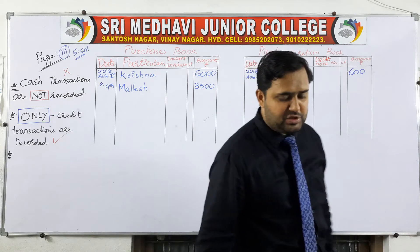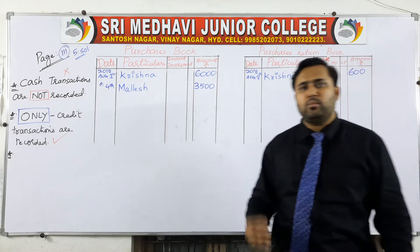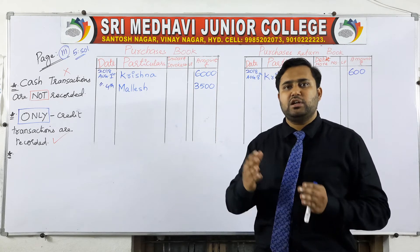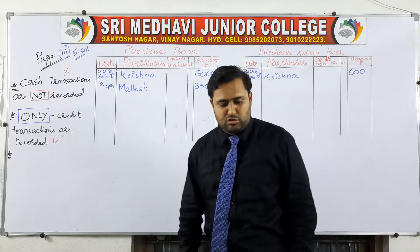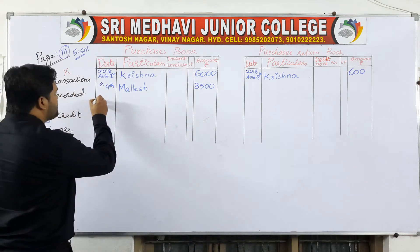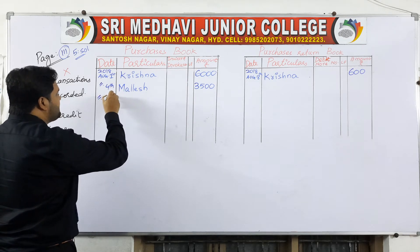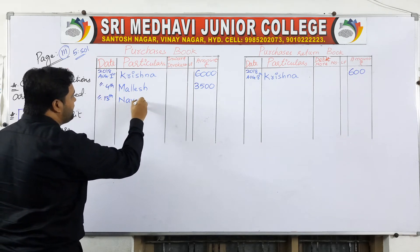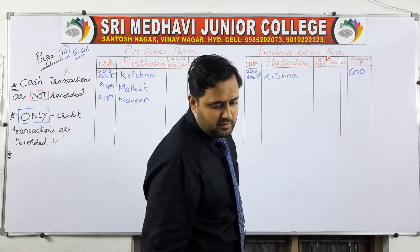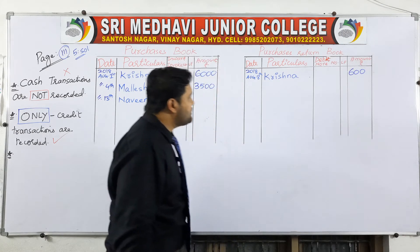The next transaction: on 13th August, bought goods from Naveen for 2,000 rupees. 'Bought' is the past tense of 'buy,' which means purchases. So you record this in the purchase book — date 13th August 2018, amount 2,000 rupees.